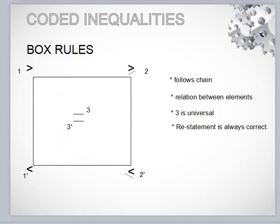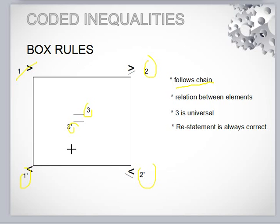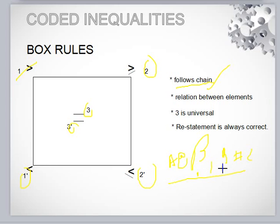Without wasting our time, let me introduce you to the box rule. This is very simple — you have to memorize only three or four rules. Rule number one: we have to follow the chain rule. In the diagram you can see greater than, greater than equal to, less than, less than equal to, and equal to, marked as one, two, three, one-dash, two-dash, and three-dash. The chain rule means: if A at-the-rate B and B hashtag C is written, this follows the chain — the object of the first statement is the same as the subject of the second.